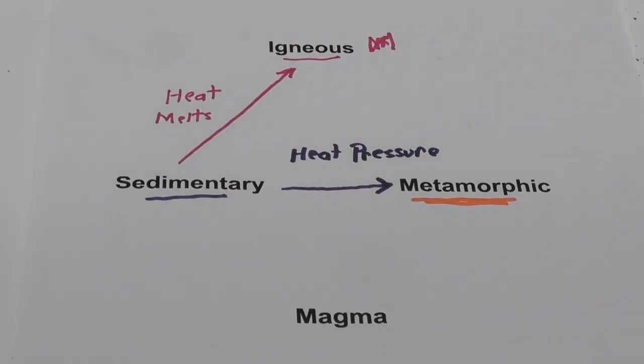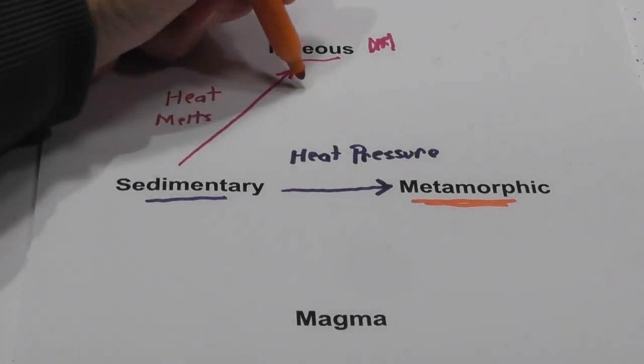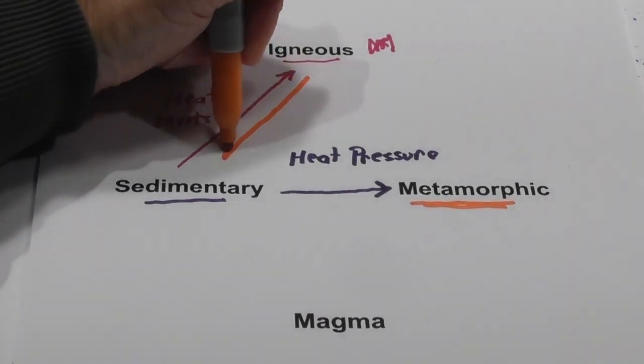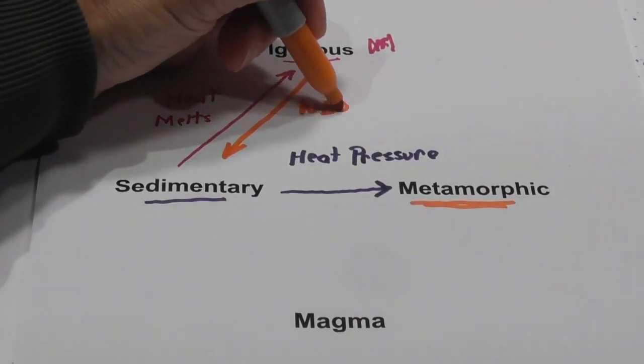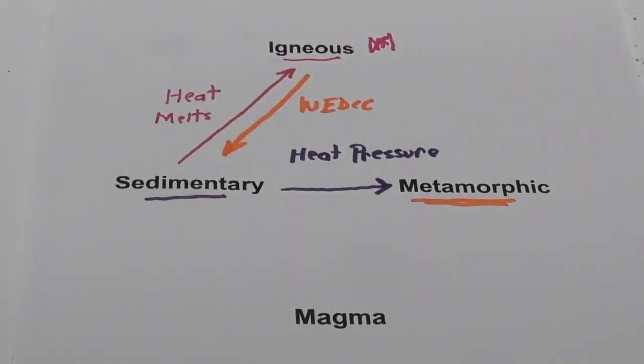How about an igneous rock becoming a sedimentary rock? Well, it uses weathering, erosion, deposition, compaction, and cementation.